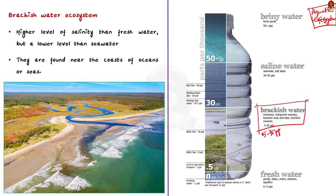Brackish water has a salinity content between 5 to 35 parts per thousand (ppt). These ecosystems are most commonly found where freshwater meets saline water. Brackish water environments tend to change constantly due to variation in salinity caused by tides, the amount of freshwater entering from rivers or rain, and the rate of evaporation. As a result, many brackish water species are tolerant to changes in salinity. The prominent examples of brackish water ecosystems include estuaries, salt marshes, and mangrove swamps.